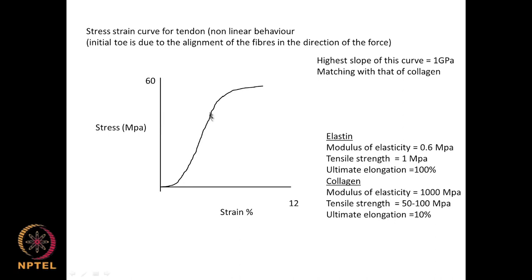The highest slope is about 1 gigapascal, which matches with that of collagen. That is why collagen is used quite a lot in many biomaterials, especially if you want to mimic the tendon and other muscles.